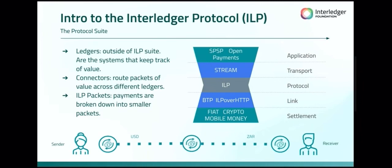If we think of a cross-currency example where a sender wants to send U.S. dollars and a receiver wants to receive rands, and your institution only has dollars and my institution only has rands, then we need an intermediary who has both dollars and rands so that they can take the dollars and send on rands instead. These intermediaries will add on some kind of transaction fee and apply exchange rates.